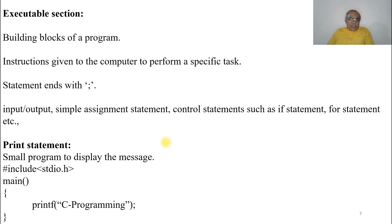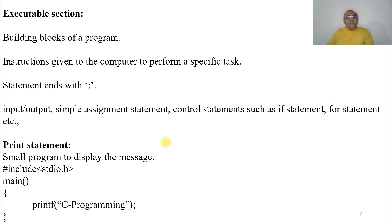Then comes the executable section — it is the building block of a program. It consists of instructions given to the computer to perform a specific task. Every statement ends with a semicolon. Statements can be input or output statements, simple assignment statements, or control statements such as if, for, while, do-while, etc.